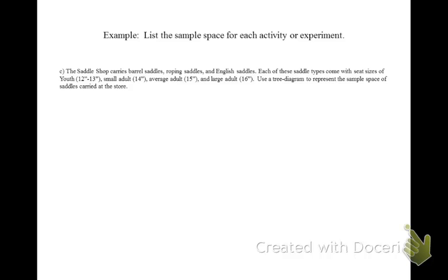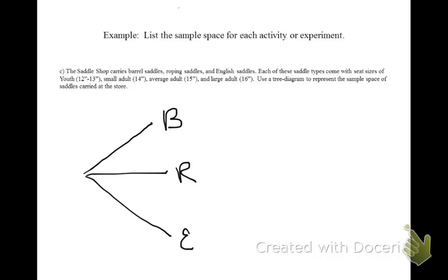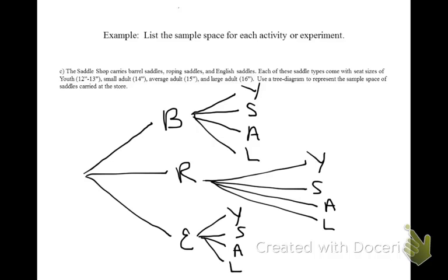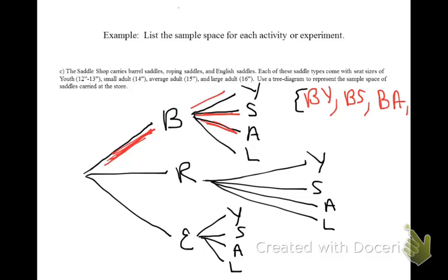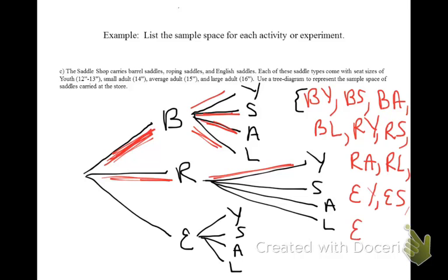Let's start by creating a set of branches for the type of saddle. Now let's create a set of branches for the saddle size. Coming off of the barrel saddles, there's youth, small adult, average adult, and large adult — same for roping and same for English. So if you were to list the sample space, you would follow each branch: barrel-youth, barrel-small adult, barrel-adult, barrel-large, then roping-youth, and so on. Make sure that you close your sample space with a set of braces, just like we opened them.